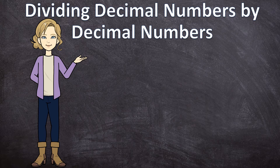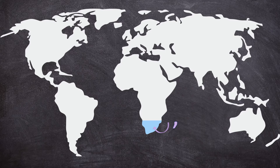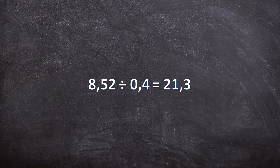Just a quick reminder: all around the world we use two different decimal separators — a comma and a point. Because I was born and raised in South Africa, I use a decimal comma. That doesn't change any steps, any rules, or anything else, except that I use a comma where you may use a point.